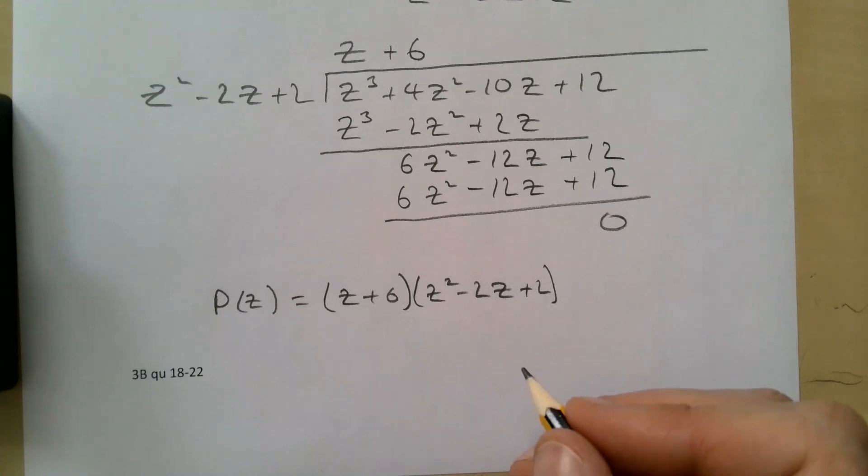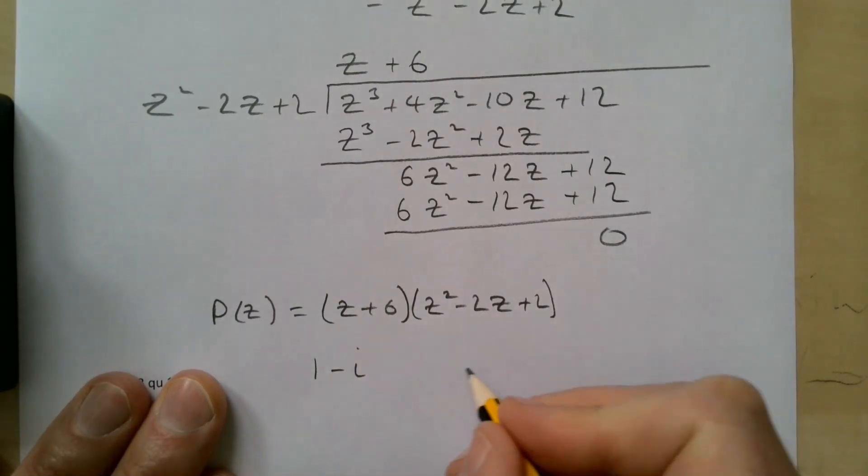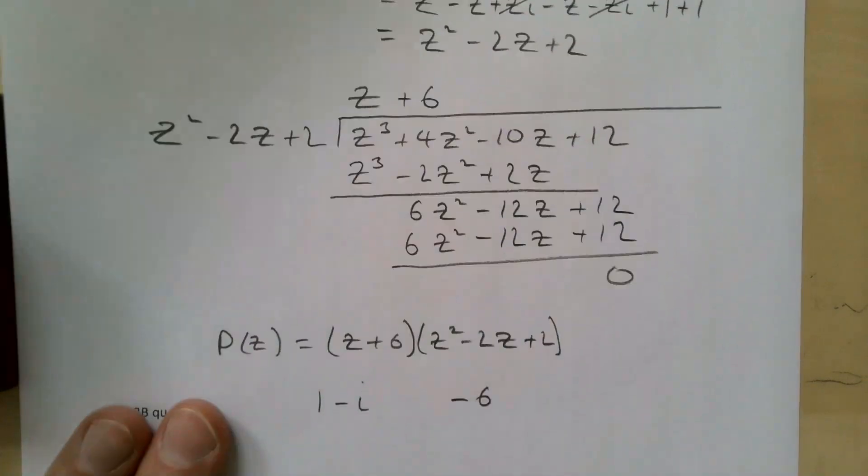And what do we have to do? The equation: the other roots are what? It says given one, find the other roots. So our roots are then 1-i, and then the other one is -6 because z+6 is a factor.